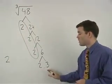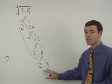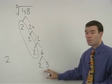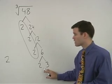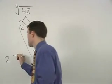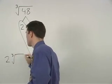The 2 and 3 that are left over will stay inside the cube root, multiplying together to make 6. So we have 2 times the cube root of 6.